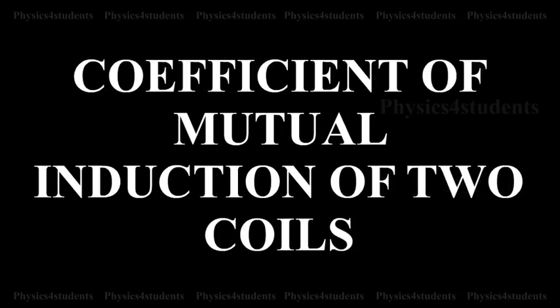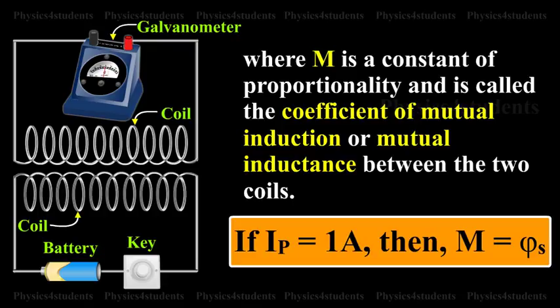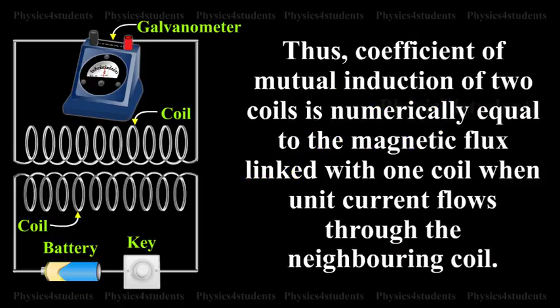Coefficient of mutual induction. If I_p is the current in coil P and phi_S is the magnetic flux linked with coil S due to the current in coil P, then phi_S is proportional to I_p, or phi_S equals M·I_p, where M is a constant of proportionality called the coefficient of mutual induction or mutual inductance between the two coils. If I_p equals 1A, then M equals phi_S. Thus, the coefficient of mutual induction is numerically equal to the magnetic flux linked with one coil when unit current flows through the neighboring coil.